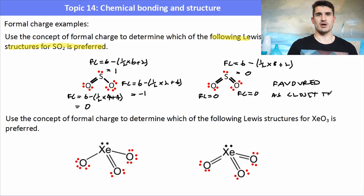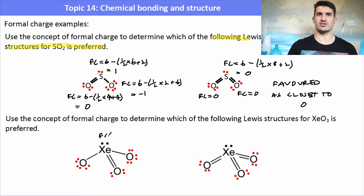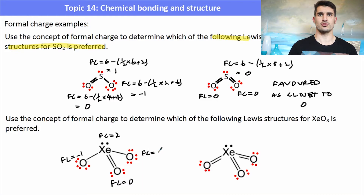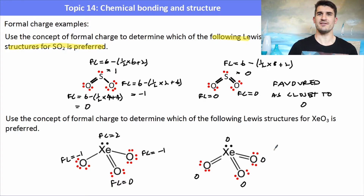For the second example, we use the concept of formal charge to determine which of the following Lewis structures for XeO3 is preferred. Again we do the formula for each of the atoms in the molecule. Xenon has a formal charge of two, and oxygen has formal charges of minus one, zero, and minus one in one structure. On the right-hand side, we can work out the formal charges — we get zeros where there are double bonds, and the xenon also comes out as zero. So the structure on the right would be favored in this case because it is closest to zero.